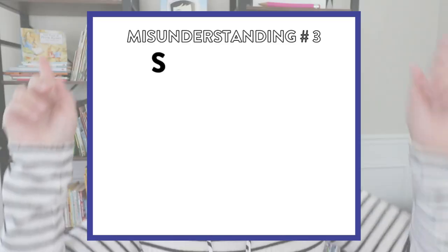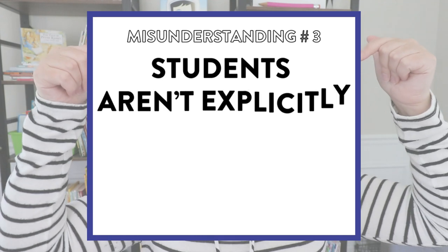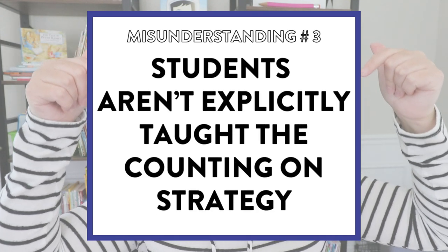Difficulty number three is that students are not explicitly taught the counting on strategy. If they're given a missing addend problem and they can simply count on to find the answer, it can be a lot more simple for them. But if they aren't explicitly taught that strategy, students don't know where to begin when they see four plus blank equals nine — many start from one and get confused. They do need to be explicitly taught that counting on strategy.